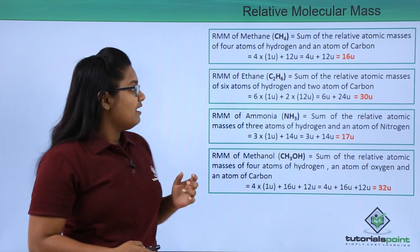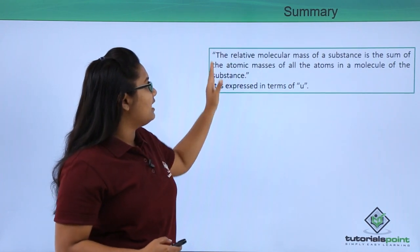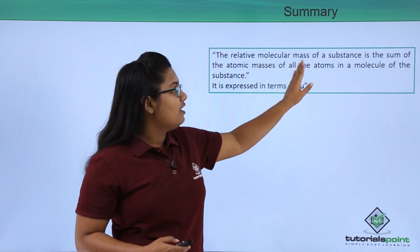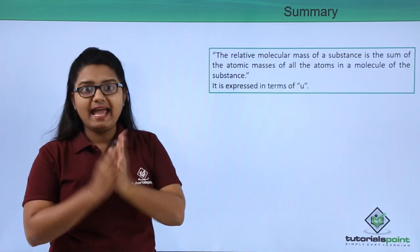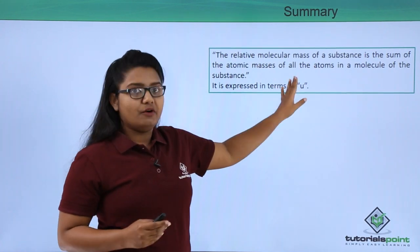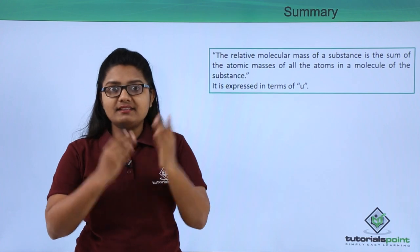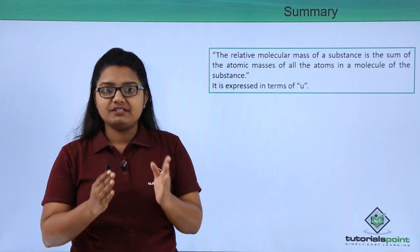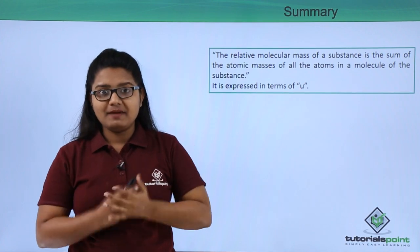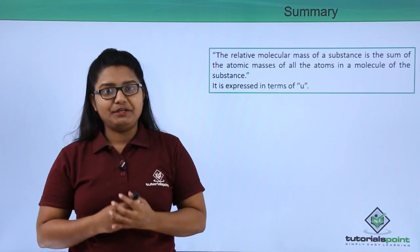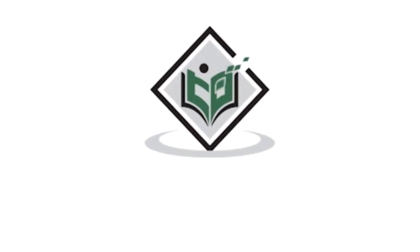In this video we have learned how to find the relative molecular masses of different molecules. The relative molecular mass of a substance is the sum of the atomic masses of all the atoms of that particular molecule, expressed in units of u (unified mass). Thank you — tutorialspoint.com, simply easy learning.